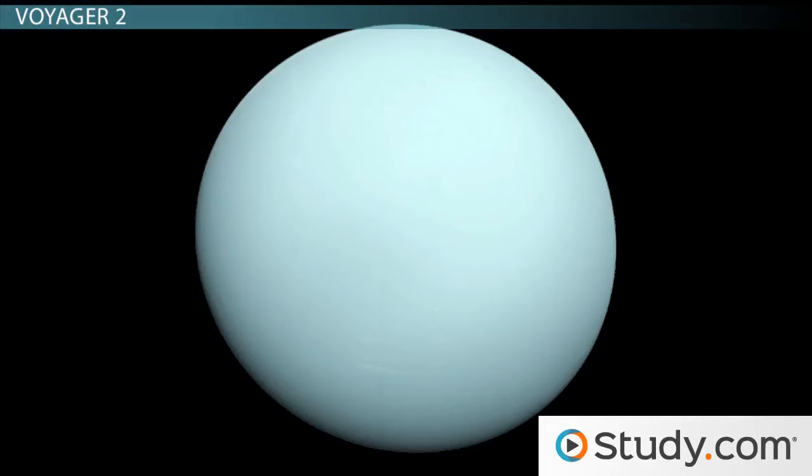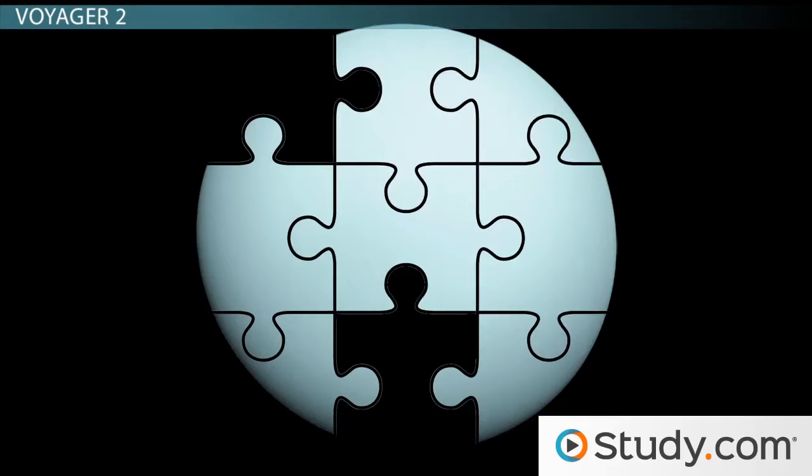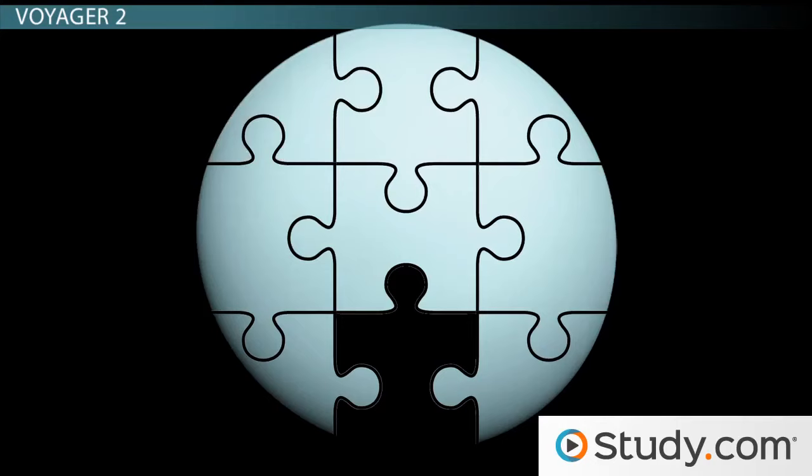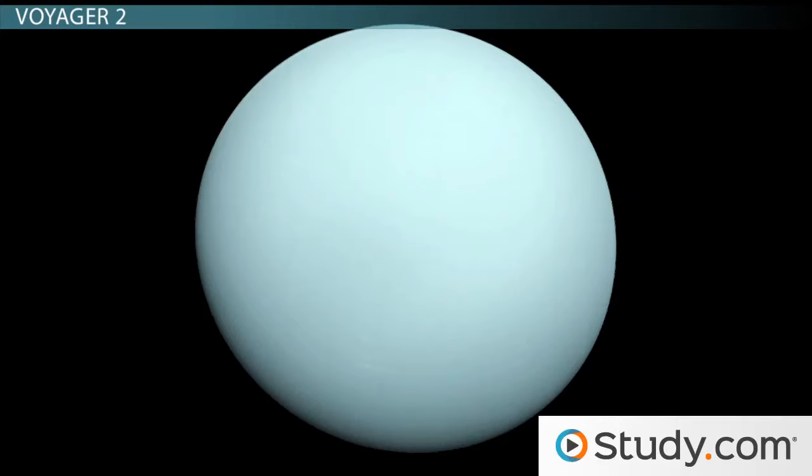Thus, much of our knowledge about Uranus is incomplete, and further investigation may cause astronomers to change their opinions about what we know now. However, this lesson will go over what we do know about Uranus, given our best observations so far.